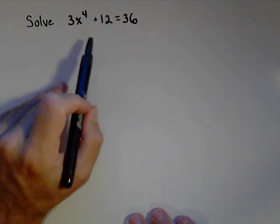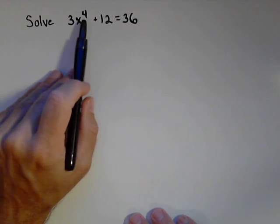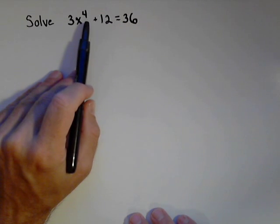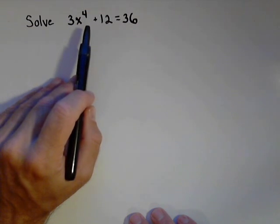So our goal is to solve the following equation for x. Since we have a fourth degree polynomial, there's a good chance we could have as many as four answers. So let's see what's going to happen.